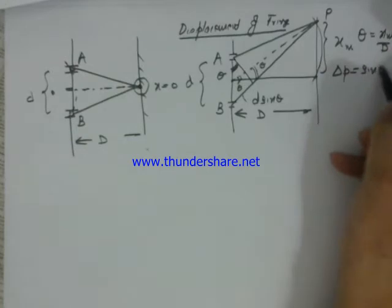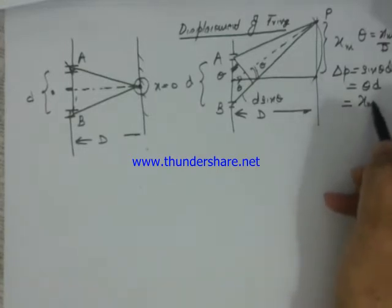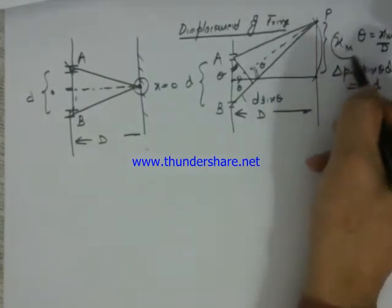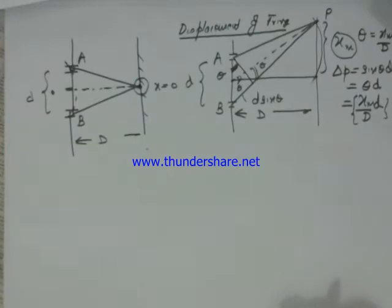So the path difference delta is equal to sine theta into d. Sine theta can be written as theta because this is small, so theta d, and the value of theta is xm upon d and this is d.